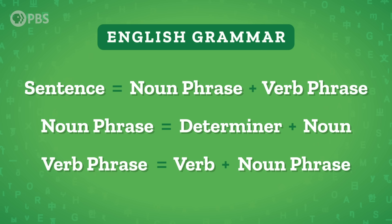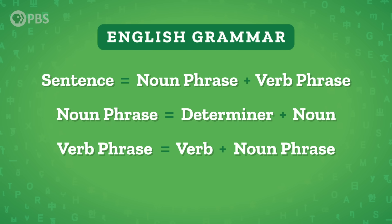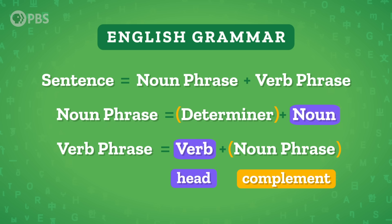But even though those rules are a good start, they still need a few tweaks. Not all of our noun phrases have a determiner in them — sometimes it's 'the rabbit,' but other times it's just 'cake.' And some of our verb phrases don't have a noun phrase in them either — sometimes it's 'sees the rabbit' or 'ate cake,' but other times it's just 'hopped.' So we need to indicate that certain parts of these rules are optional, which we can do using parentheses. The only thing that's absolutely required in a noun phrase is a noun, and the only thing that's required in a verb phrase is a verb. We call the required piece — the part the phrase is named after — the head, and the less important additions the complement.